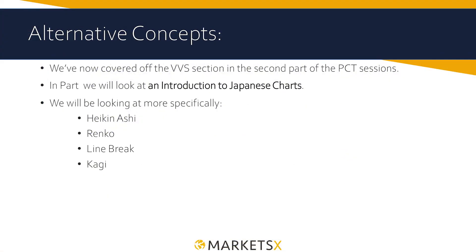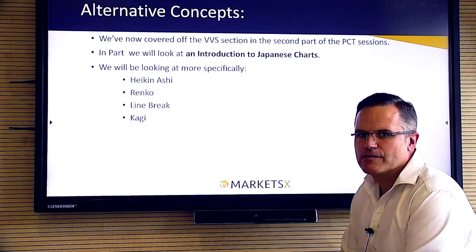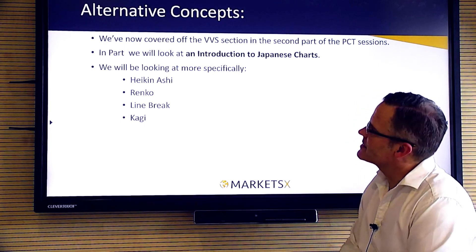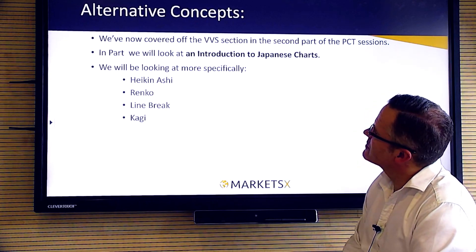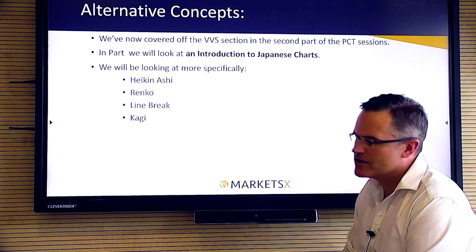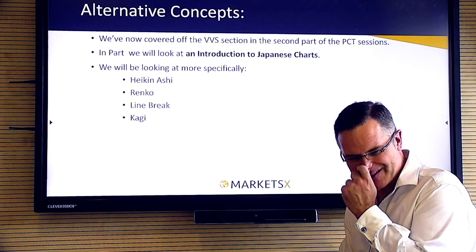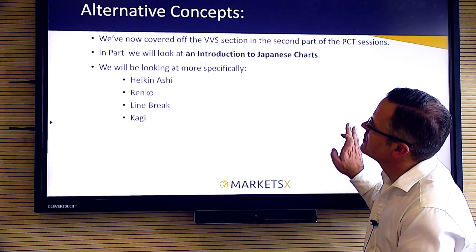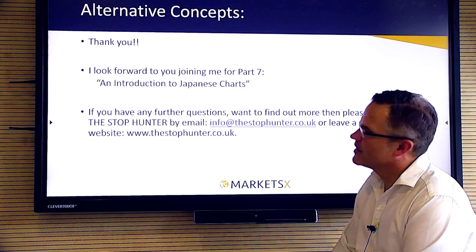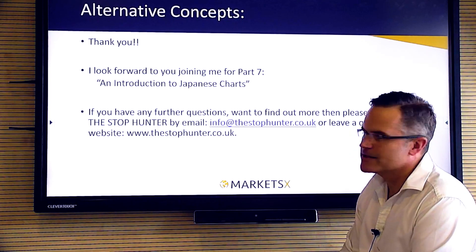So we've now covered off the alternative concepts. In the next session we'll be looking at my actual favourite area of technical analysis — I'm going to give you an introduction to Japanese charts. We'll be looking at four specific types: Heiken Ashi, Renko, Line Break and Kagi. We've already seen one idea, Ichimoku, in an earlier episode, but these four are ones I particularly like and use. Thank you very much, and I look forward to you joining me in part seven: an introduction to Japanese charts.